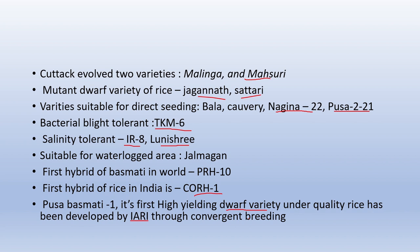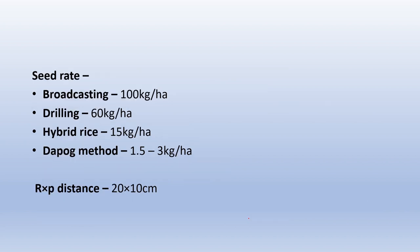Regarding seed rate: for broadcasting, seed rate is 100 kg per hectare — broadcasting always requires a higher seed rate. For drilling method, seed rate is 60 kg per hectare. For hybrid rice production, seed rate is 15 kg per hectare. And for the DAPOG method, seed rate is 1.5 to 3 kg per hectare.